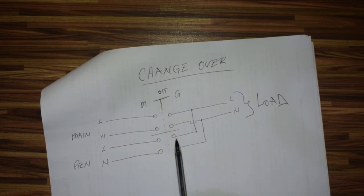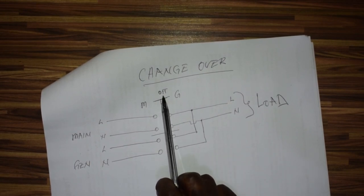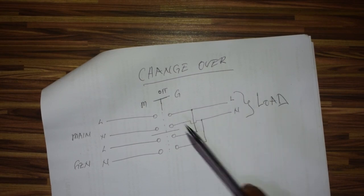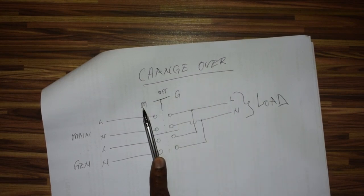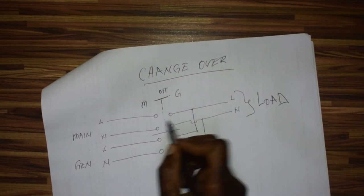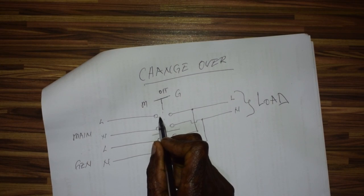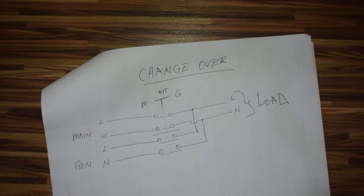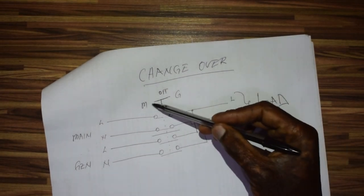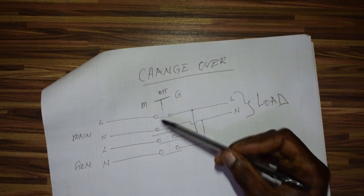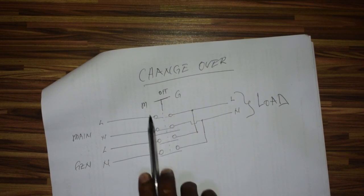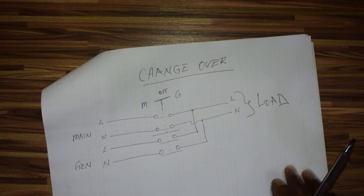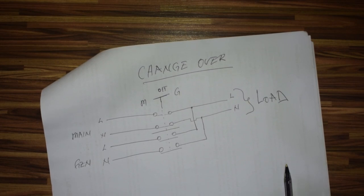If the knob is in the off position, that simply means all these contacts are open - neither gen nor main, no power. You turn the dial to M and this will close. This means these contacts are closed and these are open. If power goes, you just go and turn the dial, like the one I showed you earlier. Here it is in zero now, so this is open.